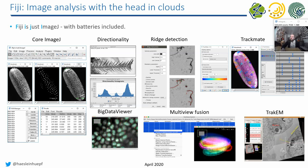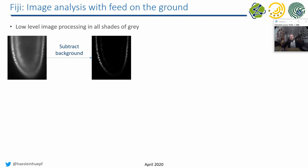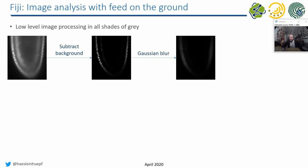So you see, Fiji contains quite sophisticated plugins which can solve many different kinds of scientific questions. On the other hand, you also have low-level image processing tools. For example, starting from an image showing a 2D plane through a Drosophila embryo, you can subtract the background, apply a Gaussian blur — operations you will learn in the next lecture — and then divide one image by the other to see the objects more clearly.